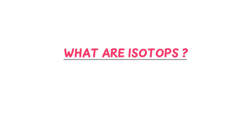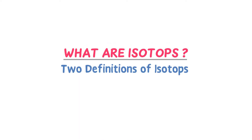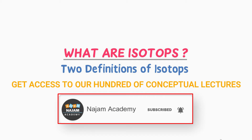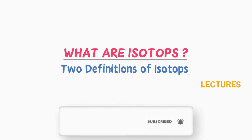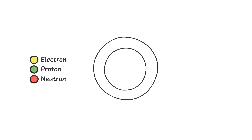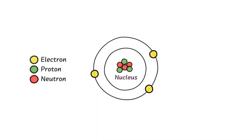What are isotopes? Two different and unique definitions of isotopes. Before starting the lecture, click on the subscribe button and get access to our hundreds of conceptual lectures for free. We know all about atomic structure — an atom is made up of three tiny particles: proton, neutron, and electron. Protons and neutrons live in the nucleus while electrons revolve around the nucleus in fixed paths.